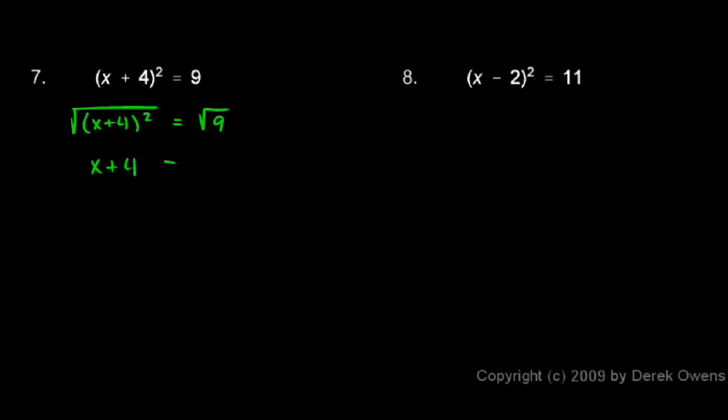So I have x plus 4 on the left. And on the right, the square root of 9 is plus or minus 3. And then to solve for x, I need to subtract this 4 right here. So I subtract 4 from each side. That leaves me with an x on the left. And on the right, I have my plus or minus 3 minus 4.